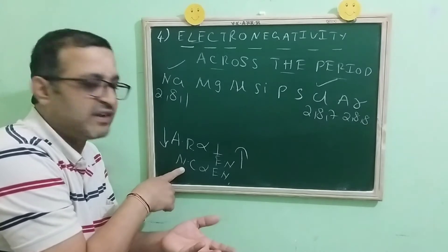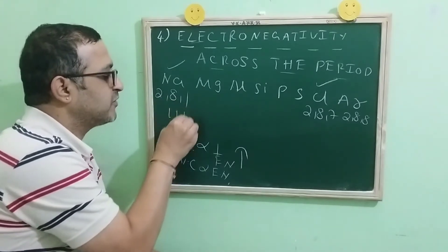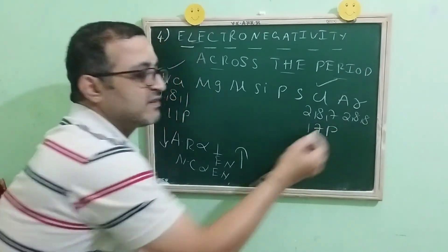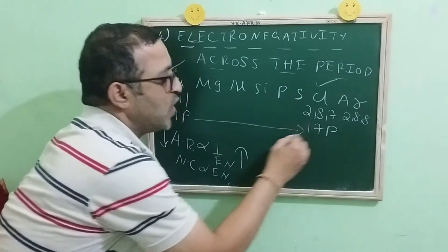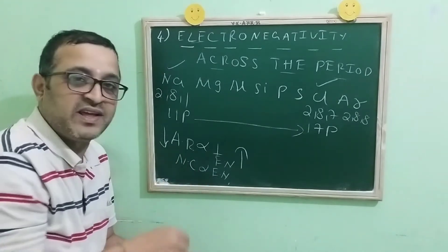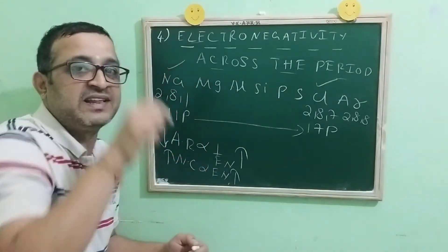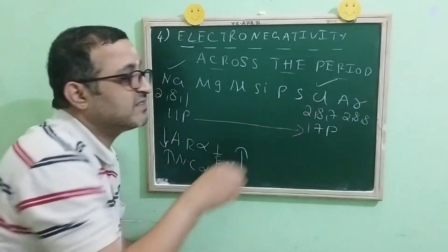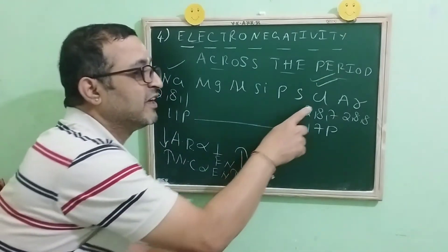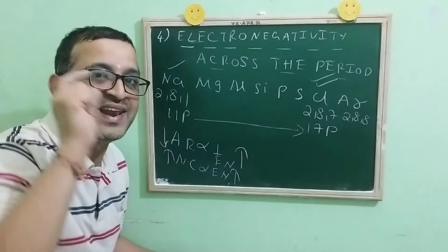Nuclear charge is one more factor affecting electronegativity. Sodium has 2+8+1 = 11 protons, and chlorine has 17 protons. When you go across the period, the nuclear charge is also increasing. As the nuclear charge increases, electronegativity also increases. So out of all these elements, the one with maximum electronegativity is again chlorine. Theoretically, chlorine is the element with maximum electronegativity.